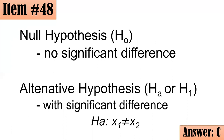By the way, the alternative hypothesis can also be written as HA or H1 — both are correct.